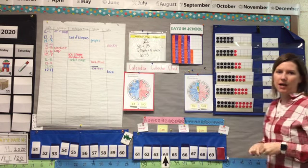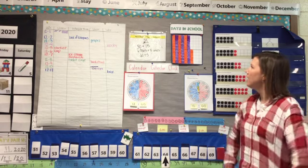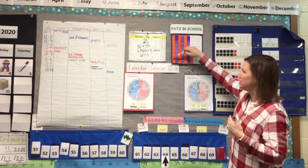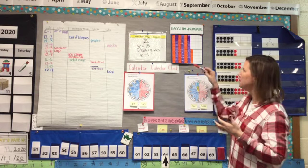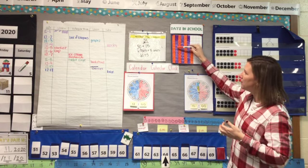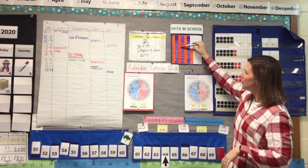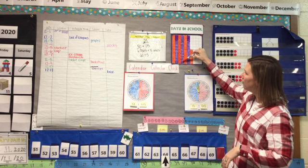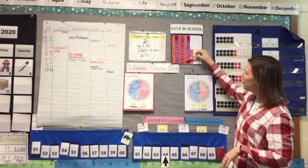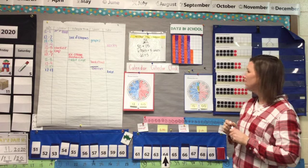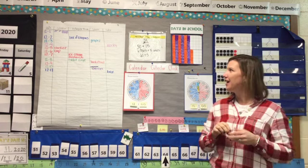Let's practice counting by fives today. We often count by tens, but let's count by fives. So we can count: 5, 10, 15, 20, 25, 30, 35, 40, 45, 50, 55, 60, 65. We have been in school for 65 days.